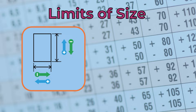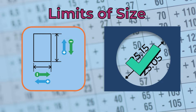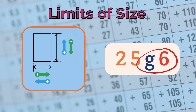Next, we have the limits of size. The limits are the basic size permissible upper and lower limits. For example, if the lower limit of a hole is 25.05 mm and the upper limit of the same hole is 25.15 mm, then a hole that is 25.1 mm in diameter is within limits and is acceptable. These limits are calculated based on the deviation and the tolerance grade.